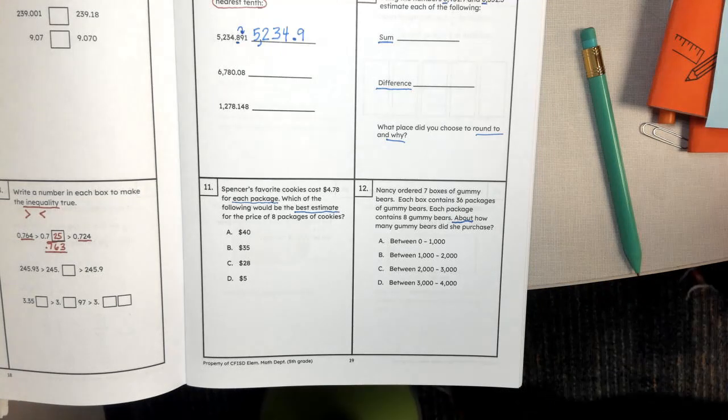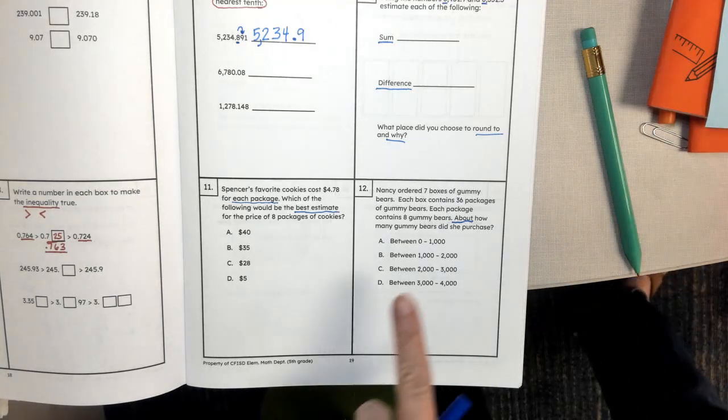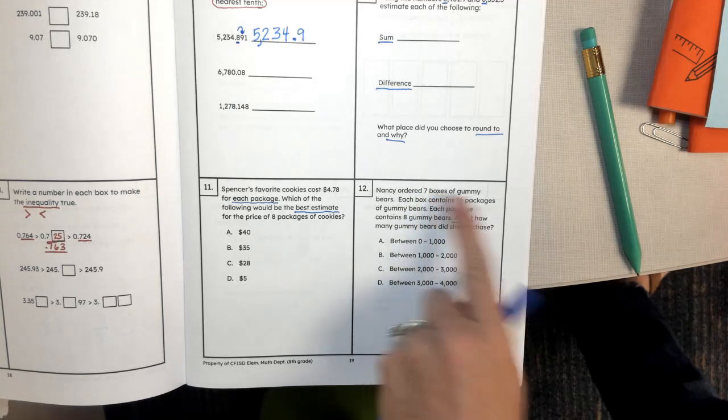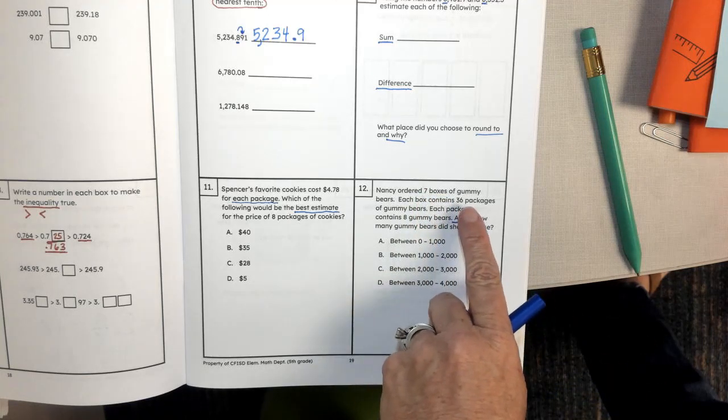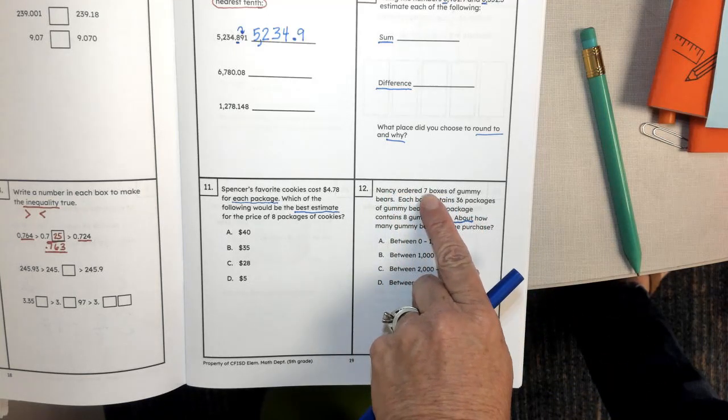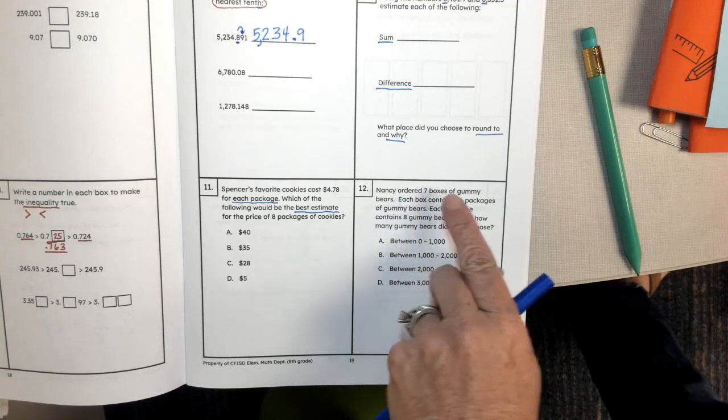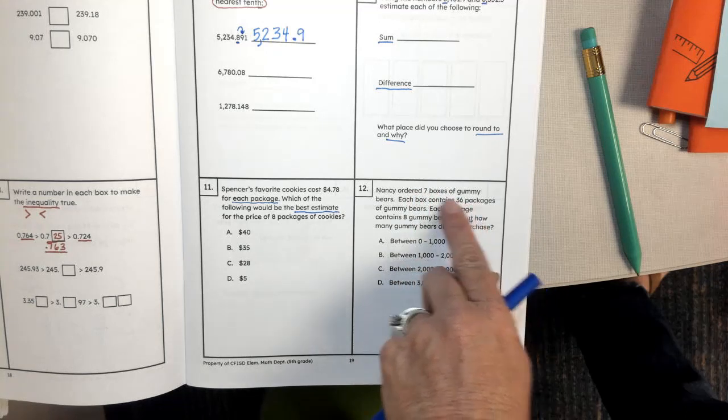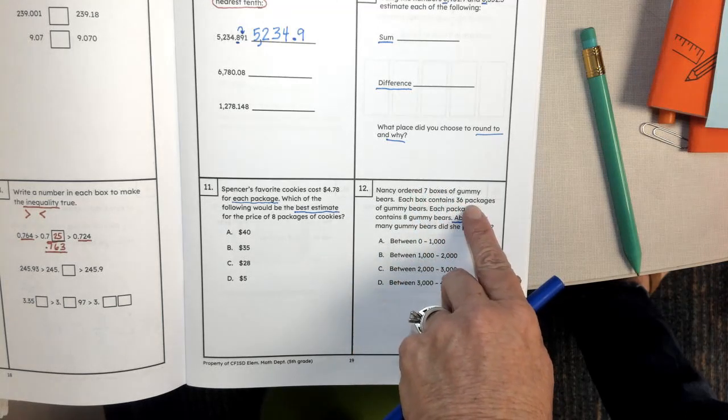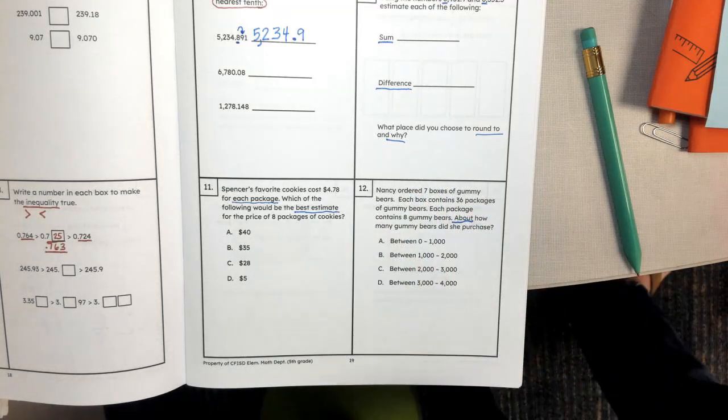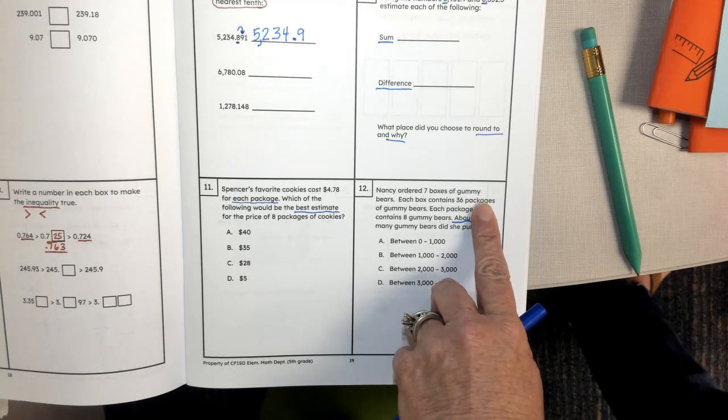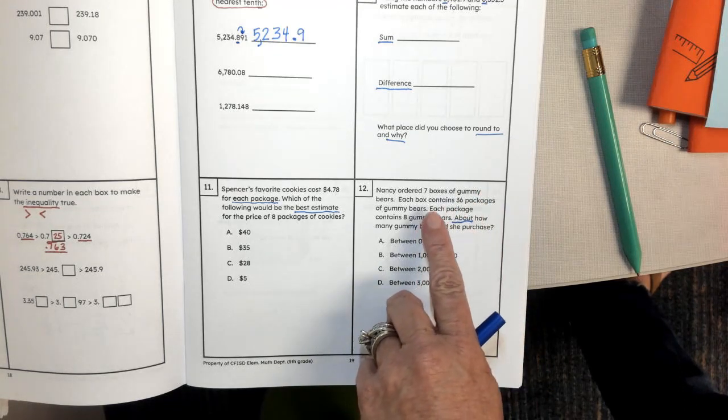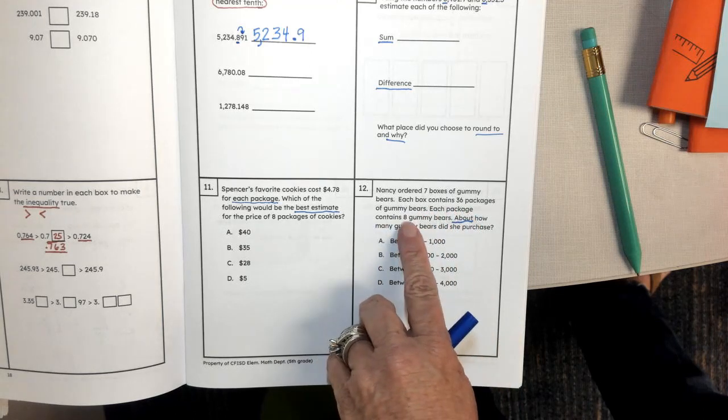We have seven boxes each with 36. That's right, we have the same information here - we have the same in each box. And are there the same number of gummy bears in each package? Each package contains eight. Again, same in each package.